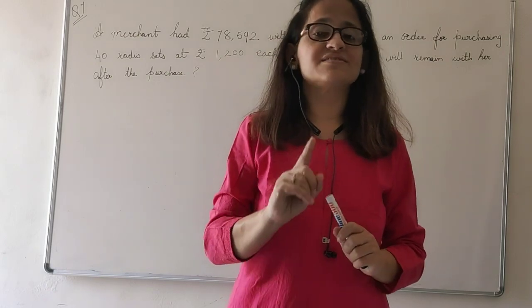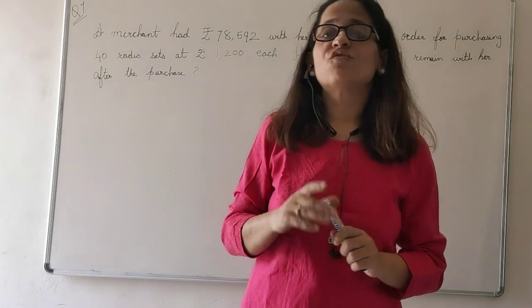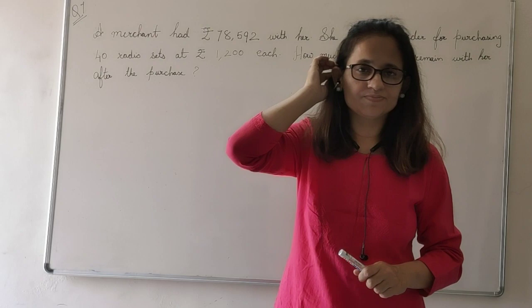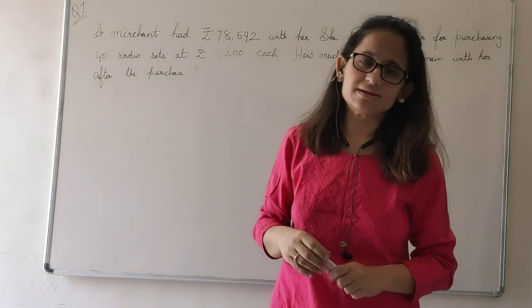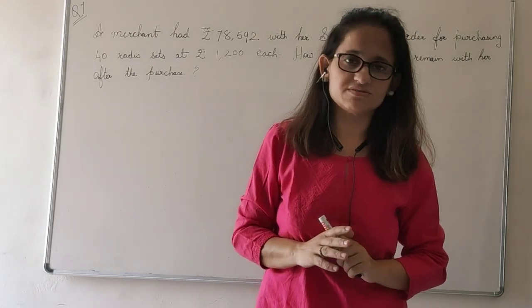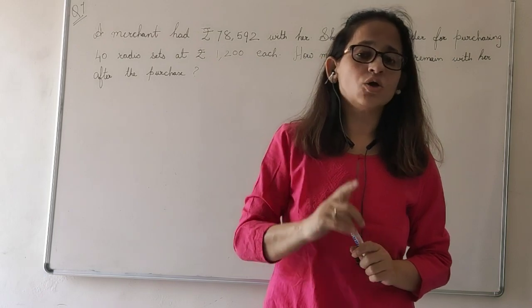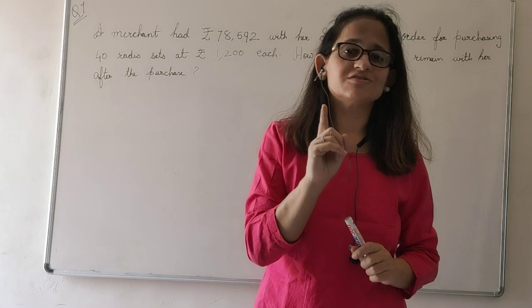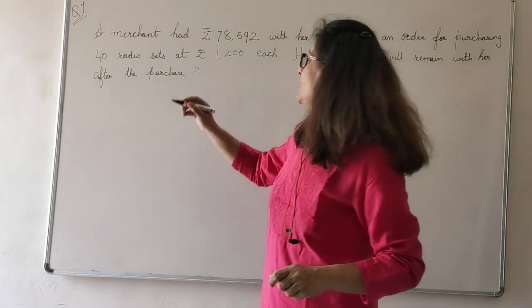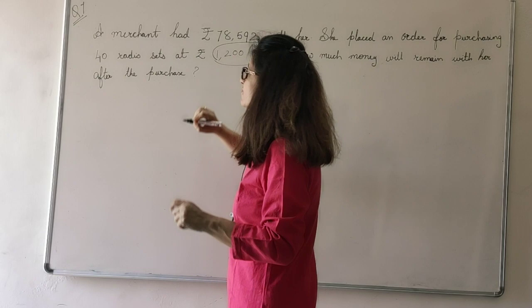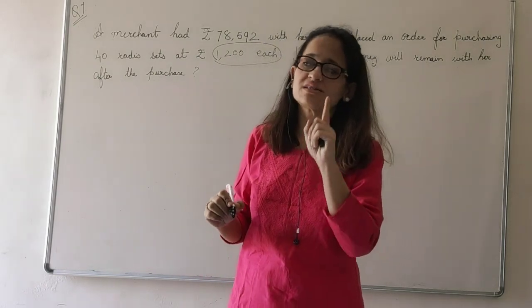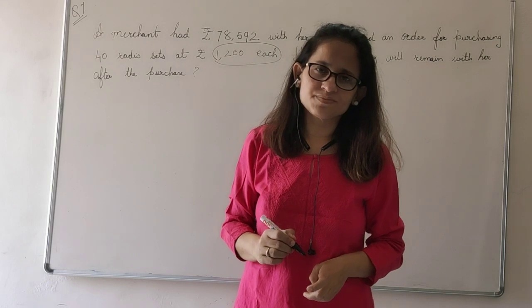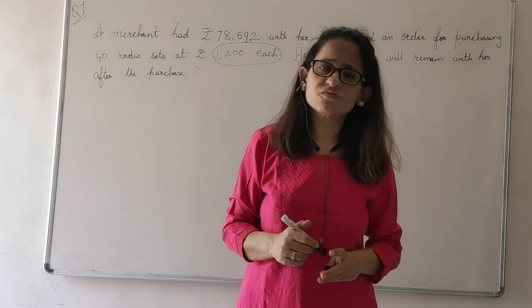Now she placed an order of 40 radio sets to the radio manufacturing factory. Now they told that one radio set is 1200 rupees. How much it is? One radio set costs 1200 rupees. 1200 each. Each means one radio set. The price of one radio set is 1200 rupees. So what will be the price of 40 radio sets?